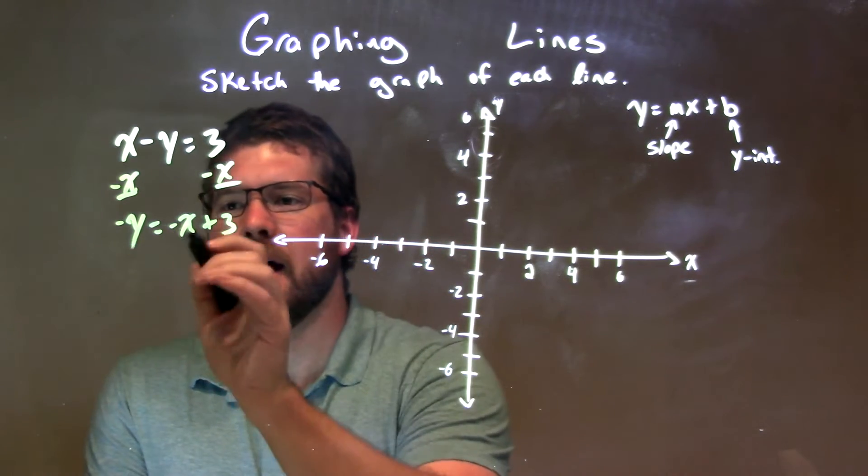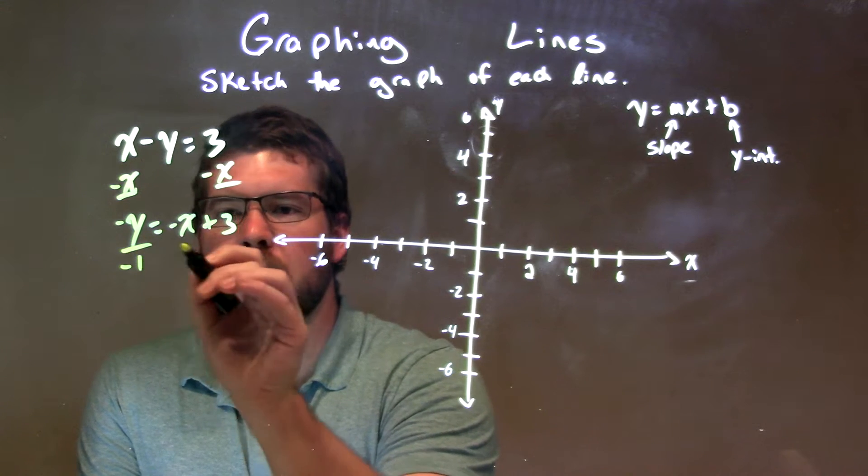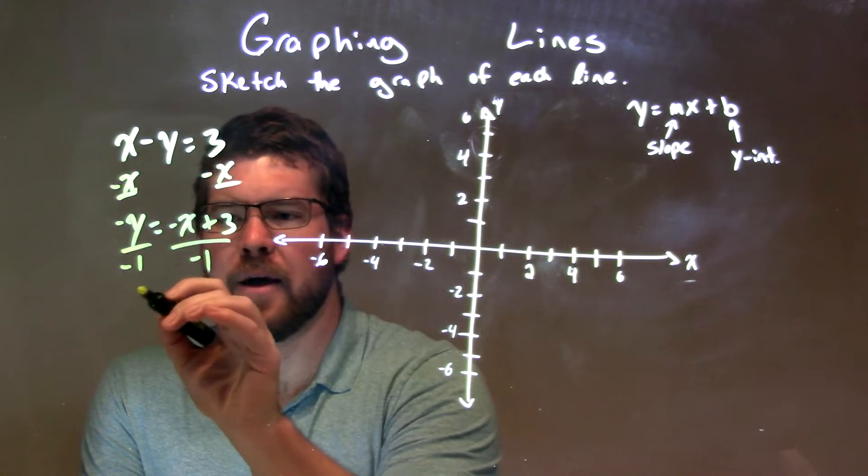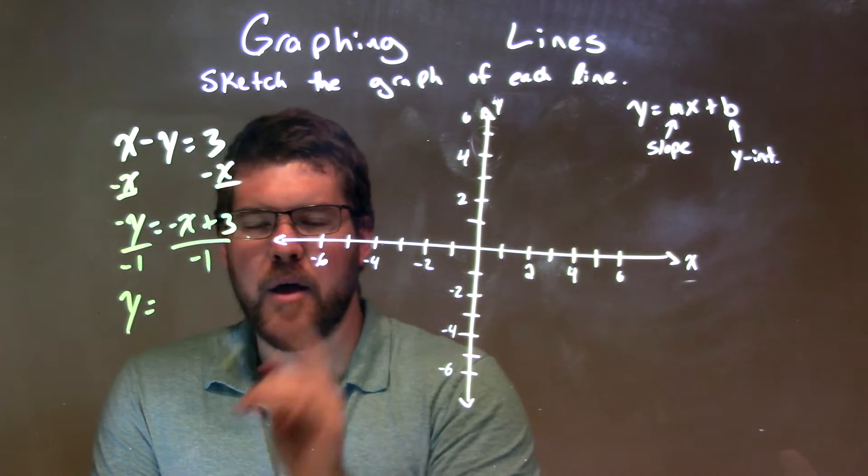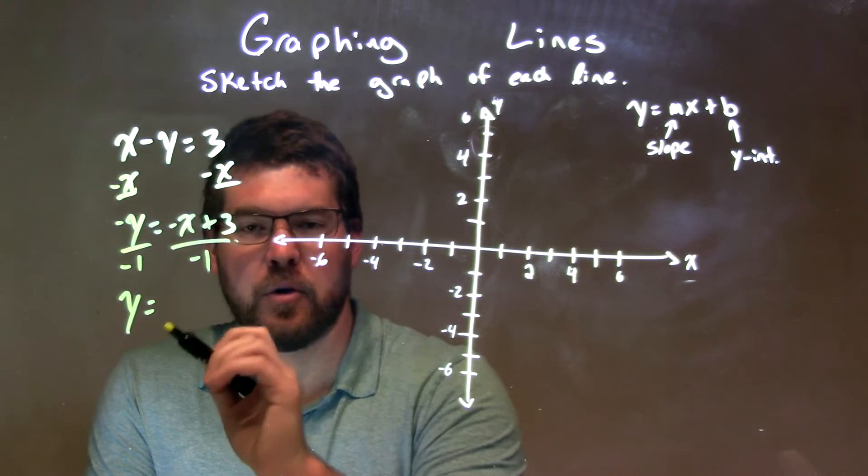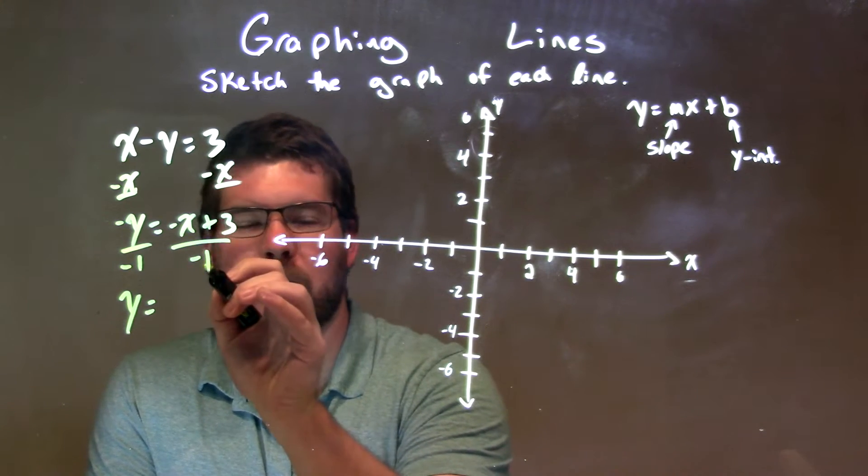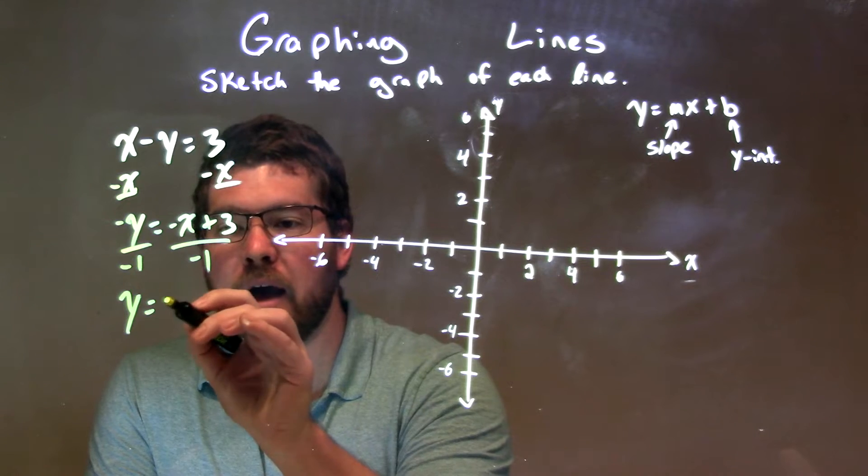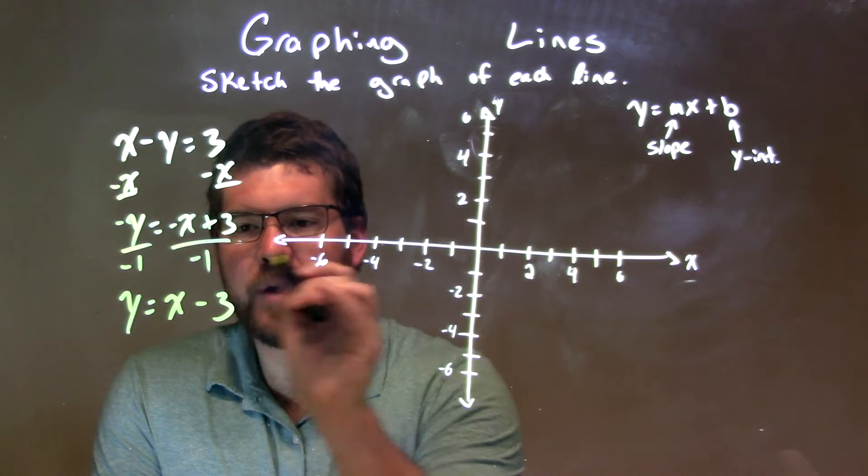And from there, I divide by negative 1 to get rid of that negative in front of the y. I have a positive in front of the y, but be careful that negative 1 needs to go to both parts. So negative x divided by negative 1 is a positive x, and 3 divided by negative 1 is a negative 3.